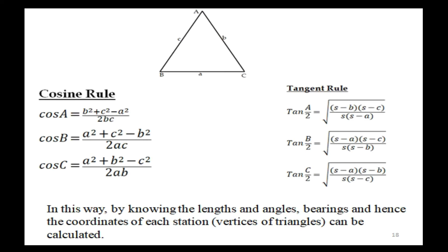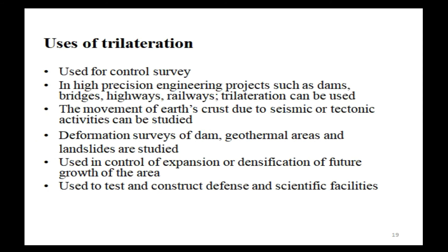By knowing the lengths and angles, bearings and hence the coordinates of each station and vertices of triangles can be calculated. Uses of trilateration: used for control surveys in high-precision engineering projects such as dams, bridges, highways, and railways. The movement of the earth's crust due to seismic or tectonic activities can be studied. Deformation surveys of dams, geothermal areas, and landslides are studied. Also used in control of expansion or densification of future growth of an area, and to test and construct defense and scientific facilities.